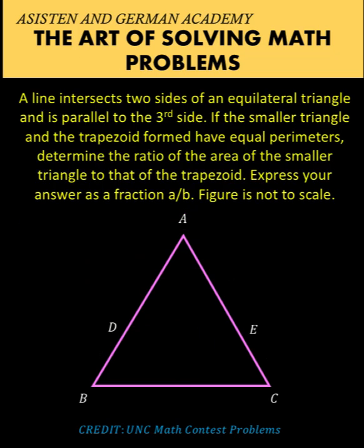Hi everyone, here is our math problem for today. We are given this equilateral triangle ABC and a line segment DE that intersects two sides of triangle ABC and is parallel to the third side BC.